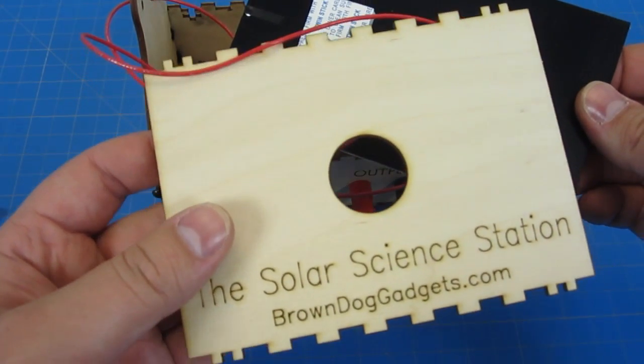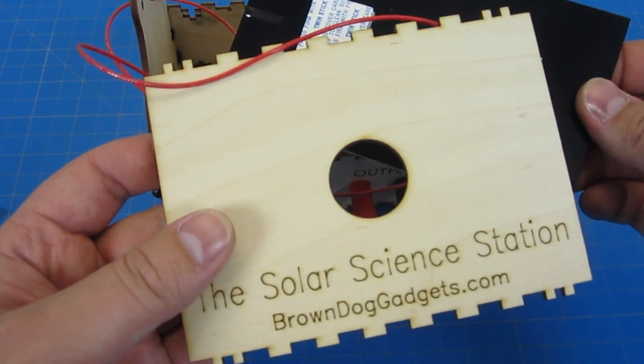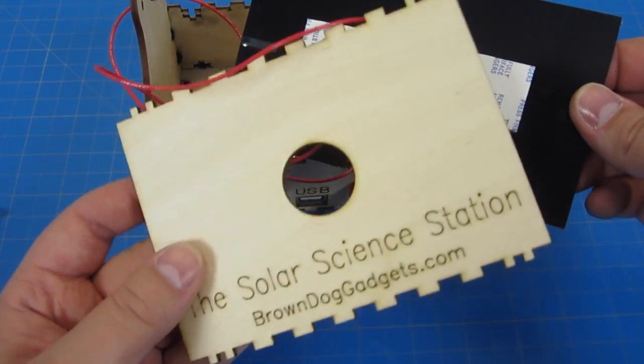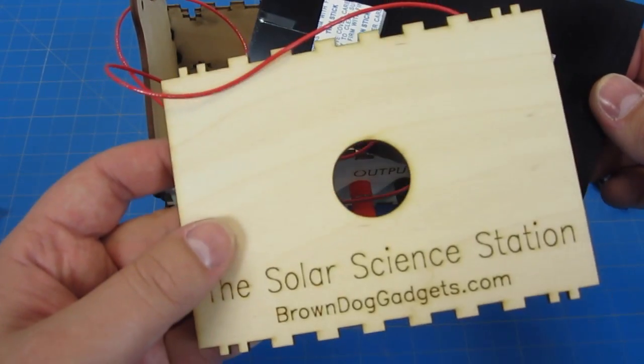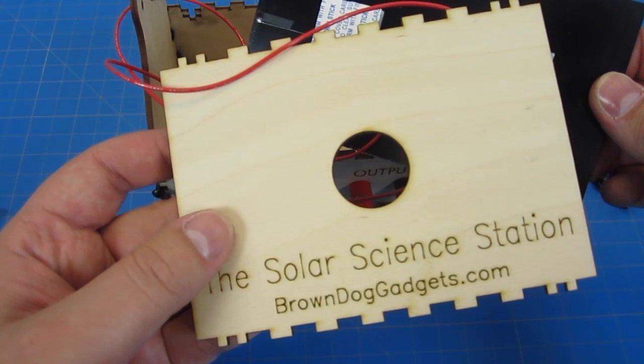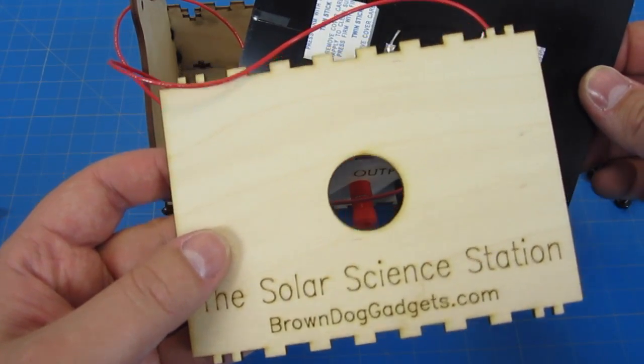If at this point you didn't thread your solar cell through the two large circles on the two pieces of wood, you're going to have to take apart your terminal block a little bit and thread those through. Hopefully you followed my advice at the beginning and avoided this.